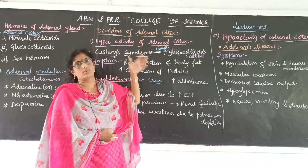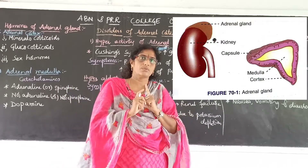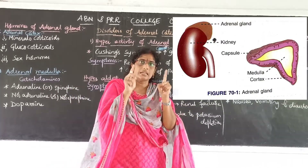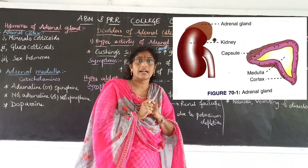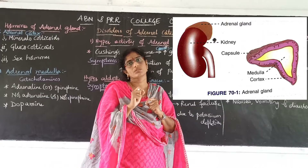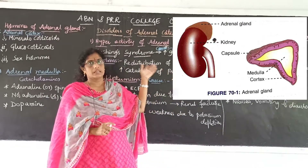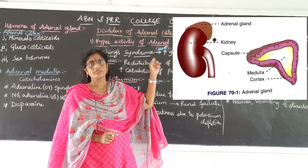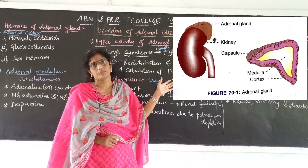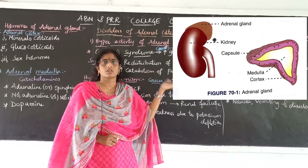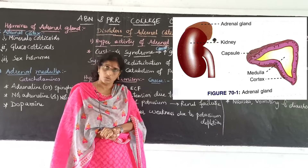Where is the adrenal gland in the body? We have two pairs of adrenal glands, located near the kidney and spine — they are also called suprarenal glands. The adrenal gland has two parts: the outer part is the cortex and the middle part is the medulla. The cortex secretes corticosteroids and the medulla secretes adrenal medullary hormones.